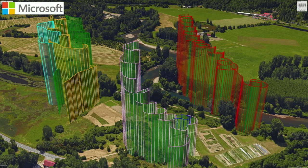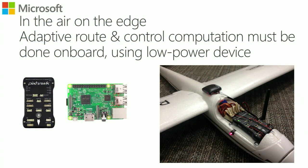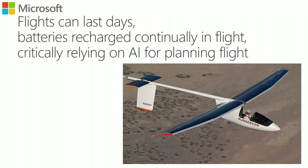This is a picture in Seattle, Washington State, not Arizona, but it shows the computer vision behind what the plane is thinking about. It visualizes the thermal drift that you can't actually see with your own eyes. We built a plane — this is an edge device, so it's in the air and needs to create an adaptive route and control computation. All of this needs to be done on board using very low power. The flights can last for a long time, so we wanted the batteries to be rechargeable in air and really rely on the AI to plan its flight.